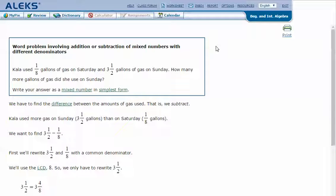We have to find the difference between the amounts of gas used. That is, we subtract. Kayla used more gas on Sunday than on Saturday, so we want to find three and a half minus one-eighth.